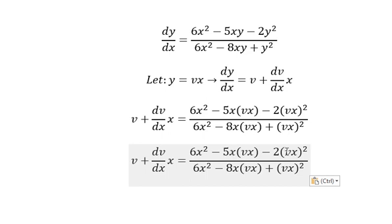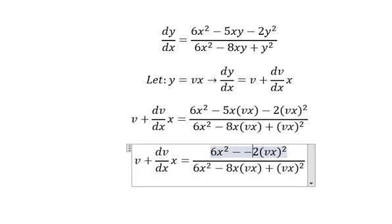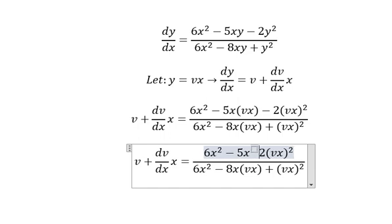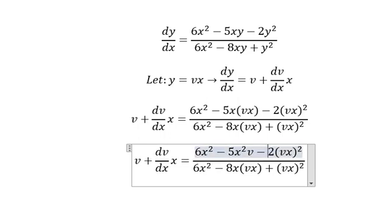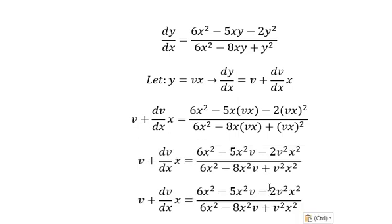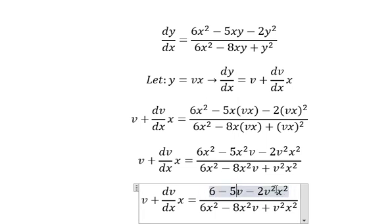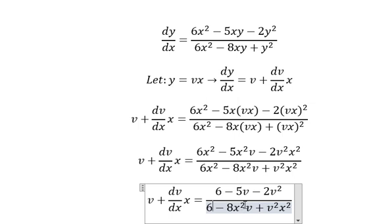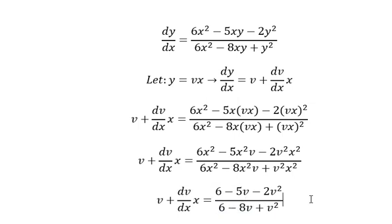Now we need to simplify this one. You got about negative 5x squared, x square v minus v square x square. This one we got about x square v, this one you got about vx square, v square x square. Now we have x square and x square, we need to simplify. Next we move v on the right.